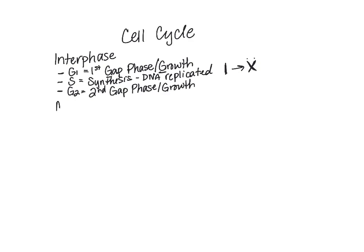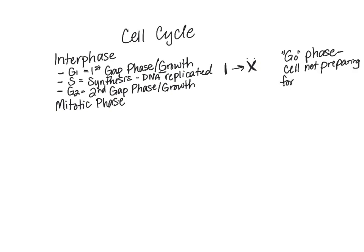After interphase, we have something called the mitotic phase. Not all cells go through the mitotic phase. There's actually a side phase called the G0 phase. The G0 phase is where a cell is not preparing to divide — it's just being a cell and not going to be going through the mitotic phase.